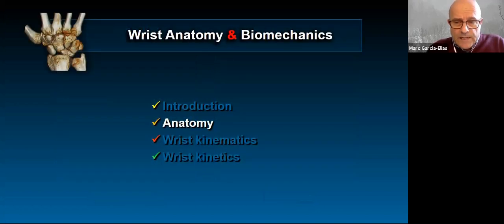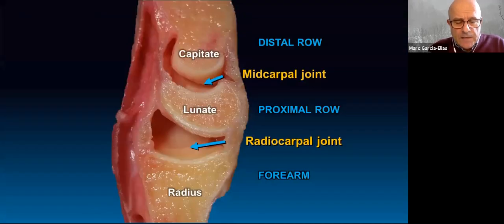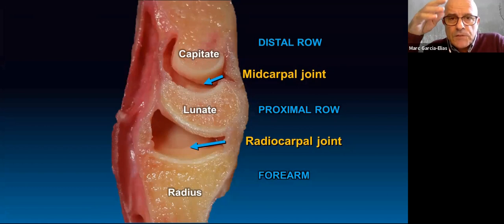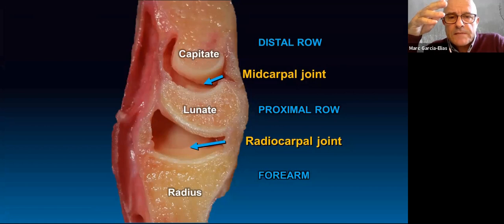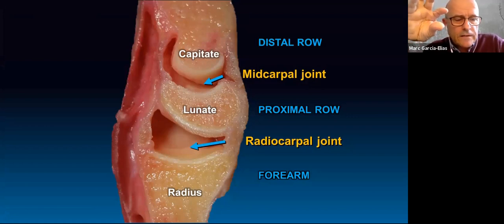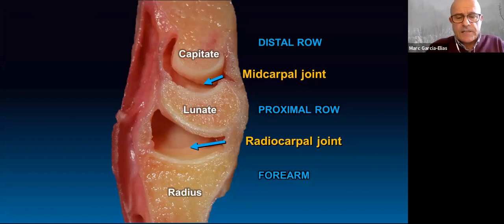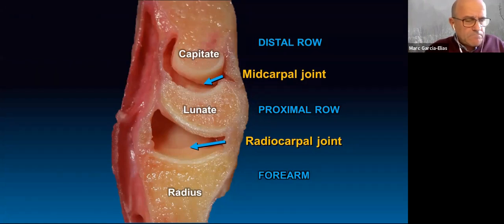We need to start with anatomy. This is a sagittal cut of a specimen. The lunate is there in between the capitate and the radius — like a floating bone, but actually it's not. It's inherently unstable, and you need the positioning provided by the scaphoid and lunate neighbors. Without them, that bone would be completely unstable.